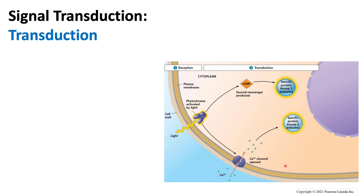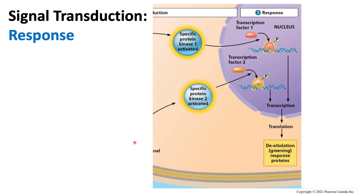We looked at reception, and this is the transduction. Now we have the response. These two protein kinases have been activated, but they each have a different job. Protein kinase number 2 is responsible for a post-translational response — meaning once a protein has already been translated, this protein kinase applies to those proteins. It will phosphorylate the proteins after they have been translated, and phosphorylation can cause a change to the protein which alters its function, correlating to the signal received.